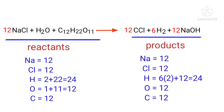The equation is now balanced. There are 12 sodium atoms, 12 chlorine atoms, 24 hydrogen atoms, 12 oxygen atoms, and 12 carbon atoms on both sides.